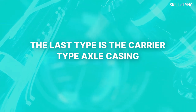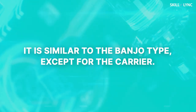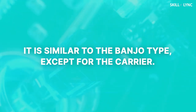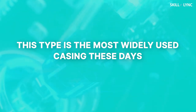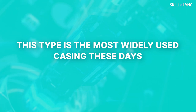The last type is the carrier type axle casing. It is similar to the banjo type except for that of the carrier. The differential is installed in a rigid malleable cast iron carrier to which the axle tubes are pressed and welded together. A domed plate is fitted to the rear end of the casing to provide access to the differential. This type is the most widely used casing these days.